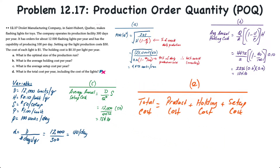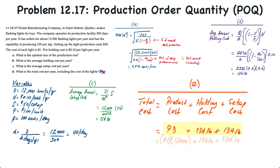Finally, for part D, we determine the total cost including the product cost itself. Total cost equals product cost plus holding cost plus setup cost. The annual product cost is P times D, which is $1 times 12,000, plus the holding and setup costs of $134.16 each. The total cost associated with producing, selling, and holding inventory is $12,268.32.